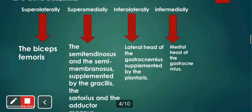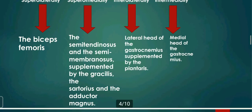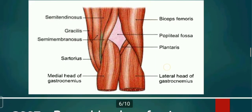Superolaterally is biceps femoris. Superomedially, the semitendinosus and semimembranosus, supplemented by the gracilis, sartorius, and adductor magnus. So superolaterally there is only one muscle — biceps femoris — and superomedially there are two muscles: semitendinosus and semimembranosus, supported by gracilis, sartorius, and adductor magnus. Sartorius is also known as the taylor's muscle — this is a very important viva question. Inferolaterally, the lateral head of gastrocnemius supplemented by plantaris, and inferomedially the medial head of gastrocnemius.